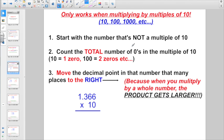Start with the number that's not a multiple of 10. In this case, it's 1.366. Count the total number of zeros in the multiple of 10. Like if it was 10, that would have one zero. Or if you're multiplying by 100, that would have two zeros. Move the decimal point in that number that many places to the right. So I'd start off with 1.366. I'm multiplying it by 10, which only has one zero. So I just want to take my decimal point and move it over one place to the right.